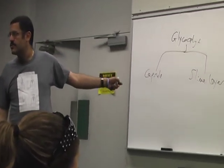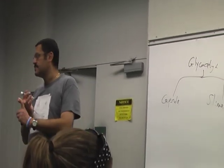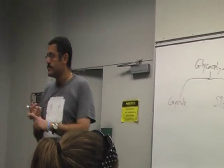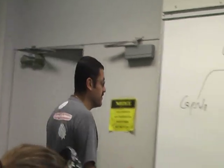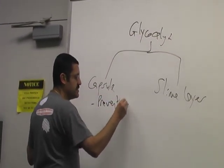One of the major functions for glycocalyx, for a capsule, let's say, it prevents phagocytosis. We talked about it in chapter 15 and chapter 3. So prevention prevents phagocytosis.